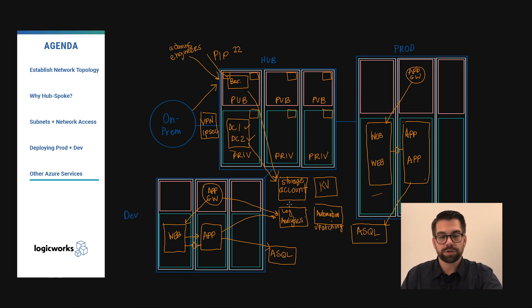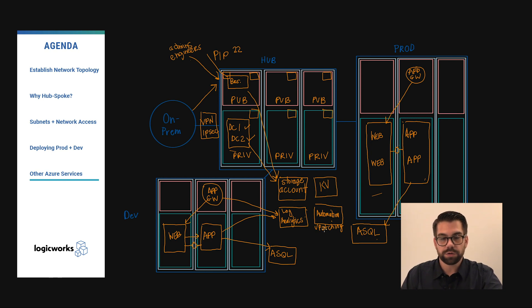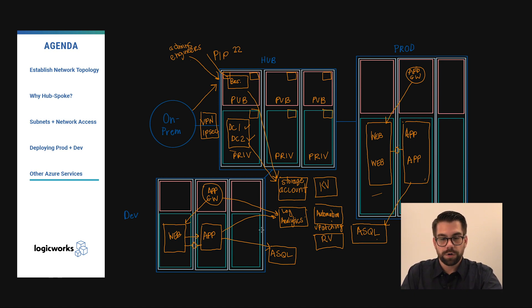We've now established monitoring for Azure resources and automated patching for virtual machines. The next thing we need to do is ensure our virtual machines are being backed up in case we need to revert if there is an issue. In order to do so, we're going to deploy the Recovery Vault service. This allows us to onboard our virtual machines for backups, and during that onboarding process we establish a policy which tells Azure when you want to back up and how often.